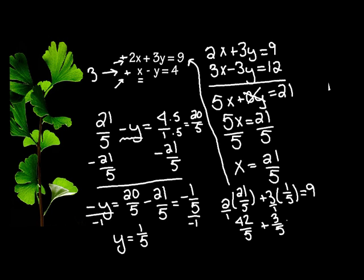Hopefully it's going to equal 9. So let's see. 42 plus 3 is 45 over 5. And 45 divided by 5 just so happens to be 9. So I know I did that one right.